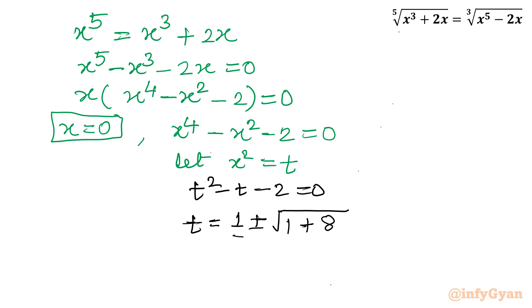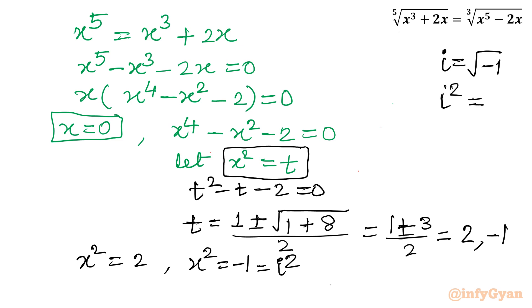So I will write quadratic formula. Minus b so 1 plus minus square root b square, so 1 minus 4ac, so I will write plus 8 divided by 2. So I can write 1 plus minus square root 9 is 3 over 2. So with plus sign we will write 4 over 2 that means 2. With minus sign we will write minus 2 over 2 that is minus 1. And what is our t? t is x square.